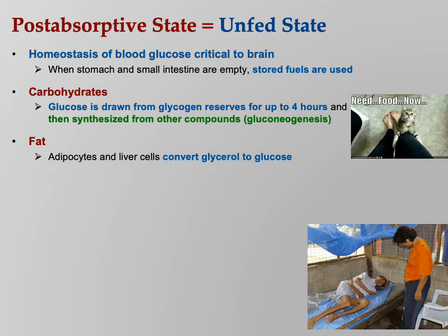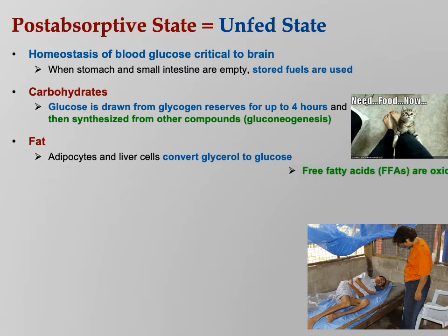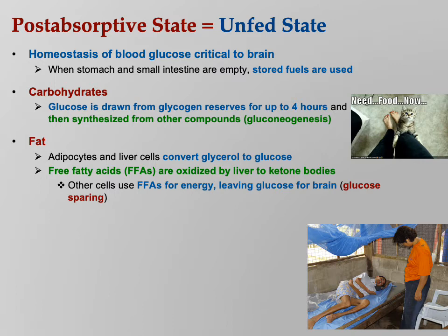For fat: adipocytes and liver cells convert glycerol to glucose — remember, glycerol from the triglycerides. Glycerol is easily converted to glucose. The fatty acids are oxidized by the liver to ketone bodies. Other cells use free fatty acids for energy, leaving glucose for the brain — that's glucose sparing. The brain only wants glucose, but other cells use free fatty acids for energy.